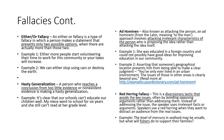The red herring fallacy is a diversionary tactic that avoids key issues. Politicians use this a lot — in fact, politicians use pretty much all of these fallacies quite often. Once you get skilled at discerning fallacies in arguments, you'll start noticing them everywhere. With a red herring, instead of addressing the issue, the speaker uses irrelevant facts or arguments to distract the audience from the real issue. For example, the real issue is mercury in seafood being unsafe, but the response is: 'The level of mercury in seafood may be unsafe, but what will fishers do to support their families?' It's trying to distract from the real issue at hand.